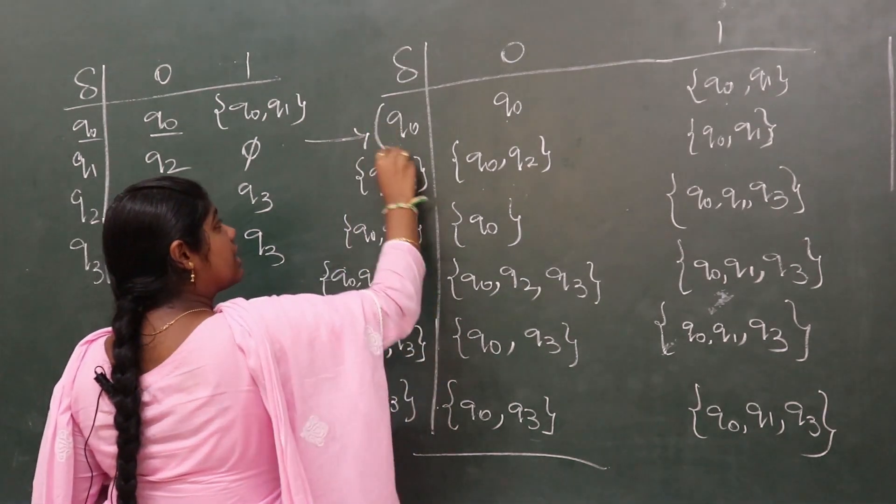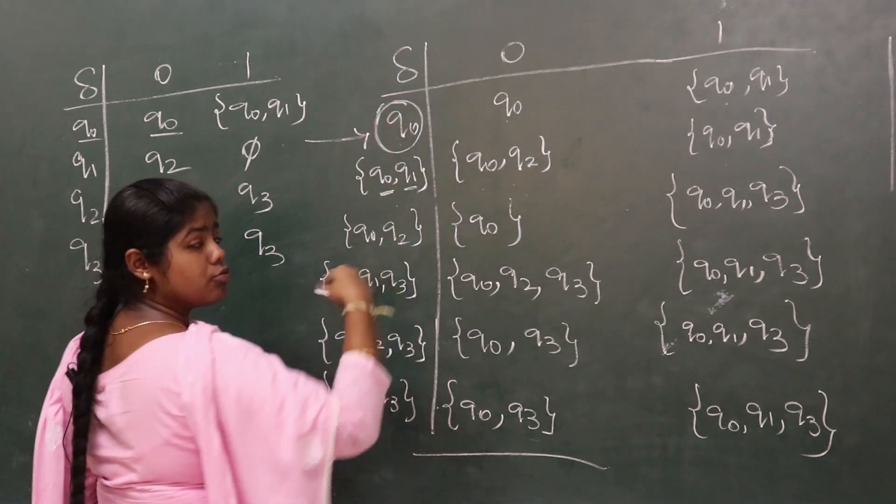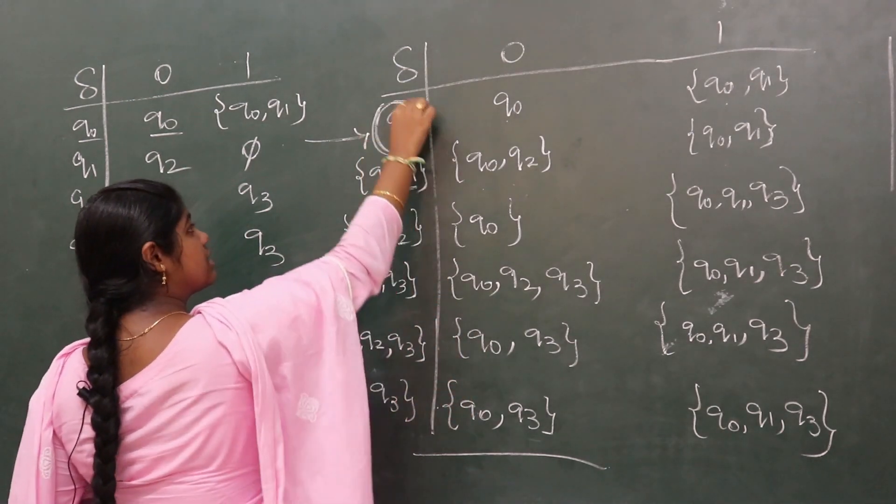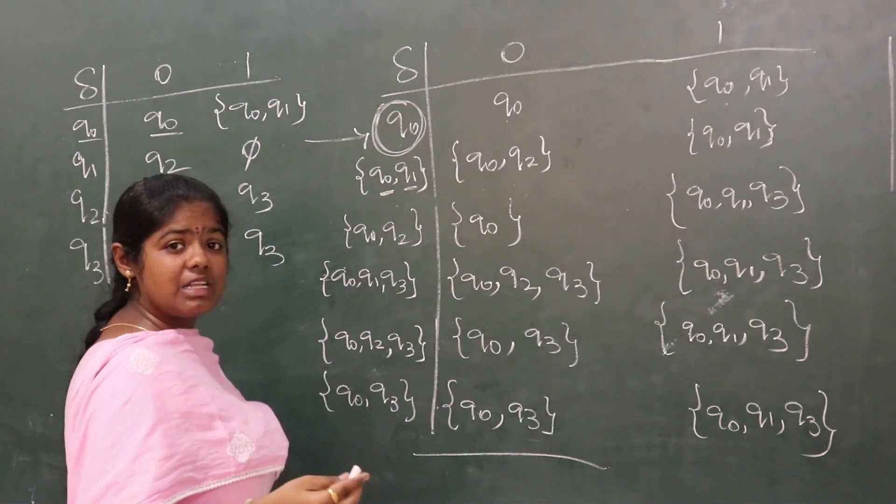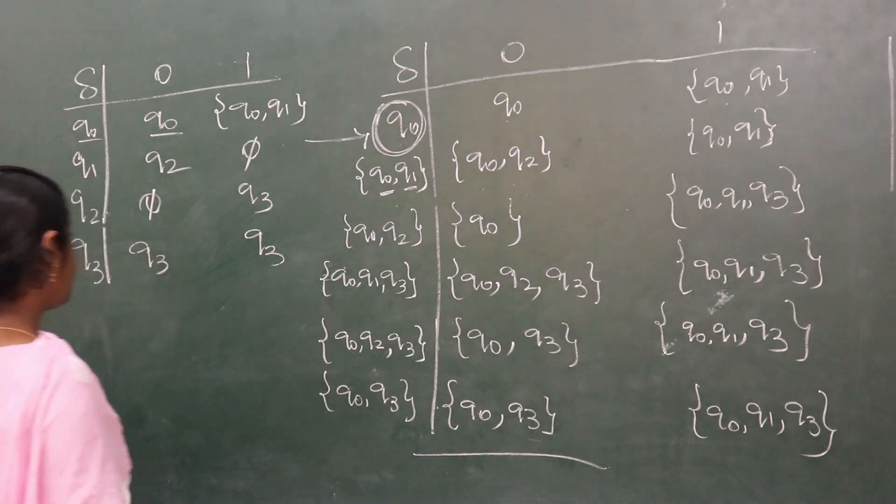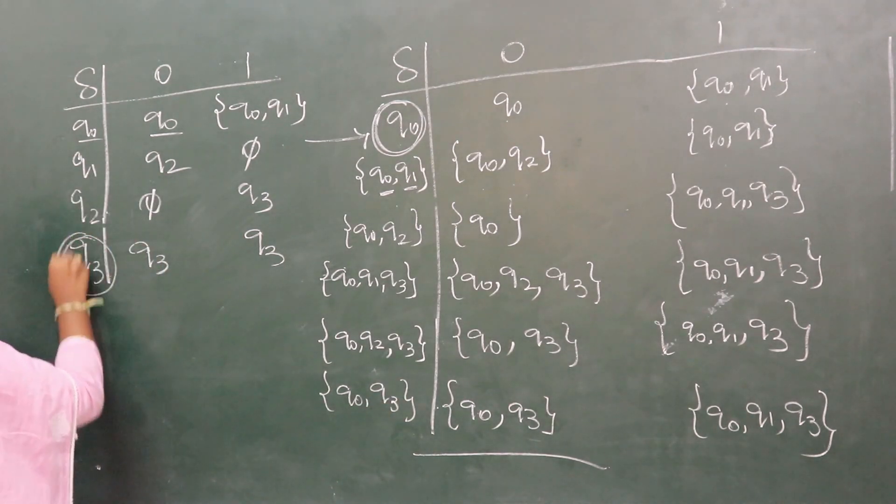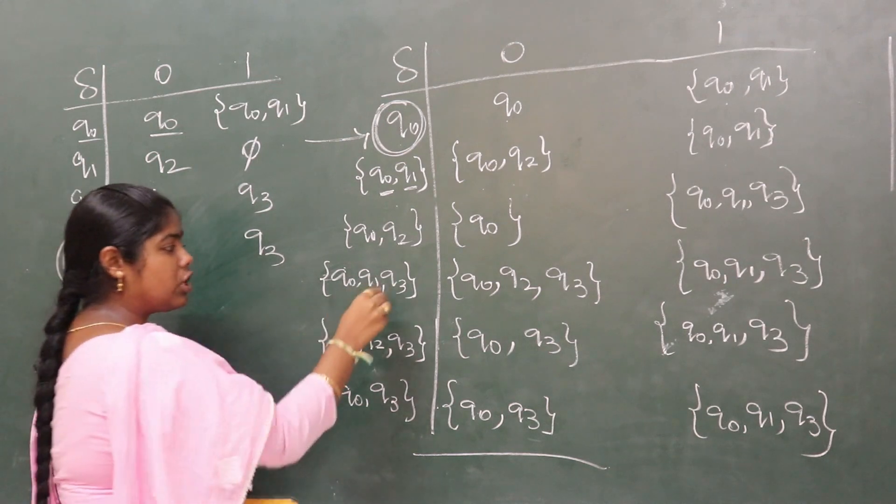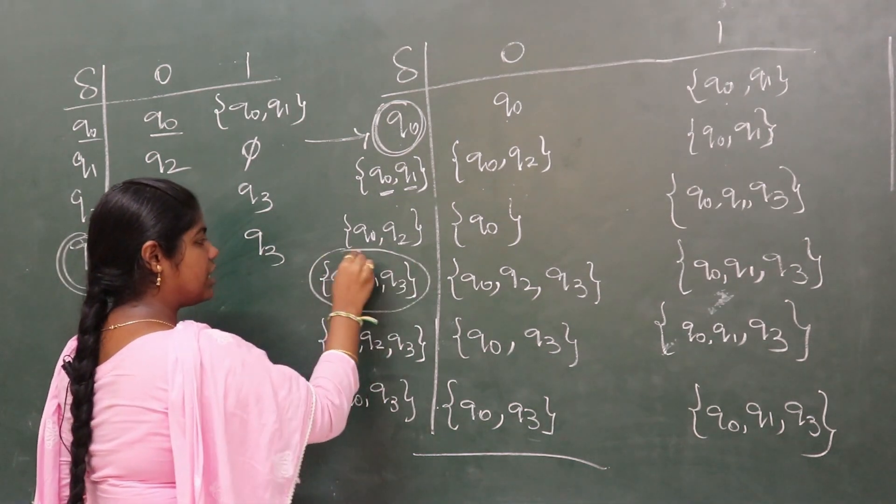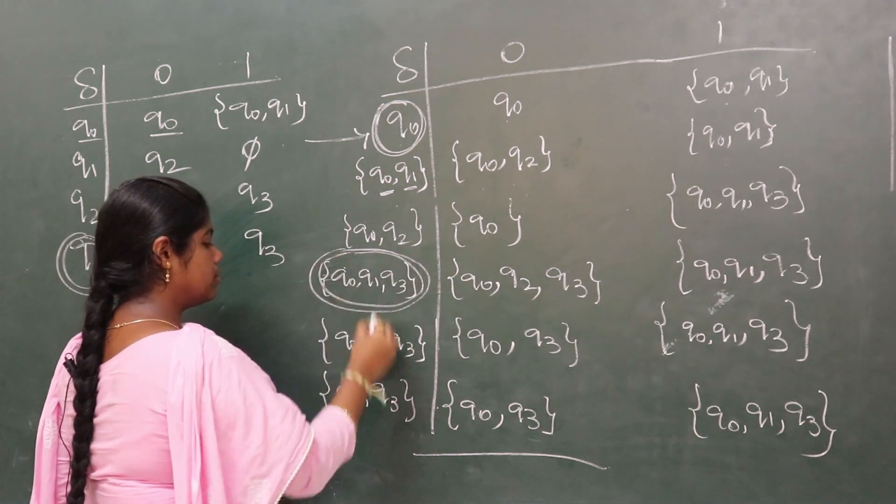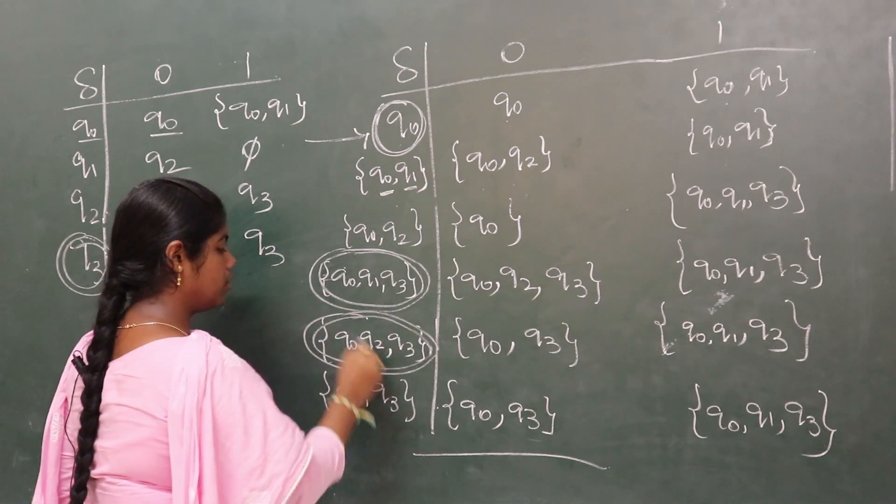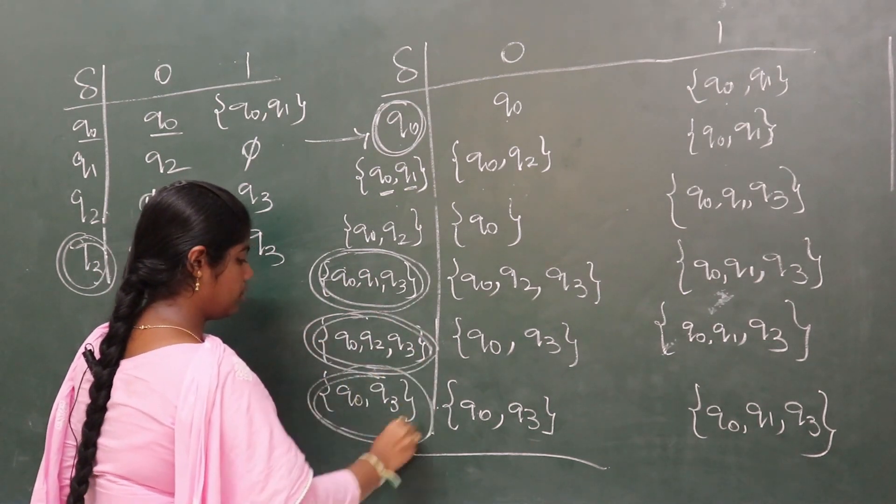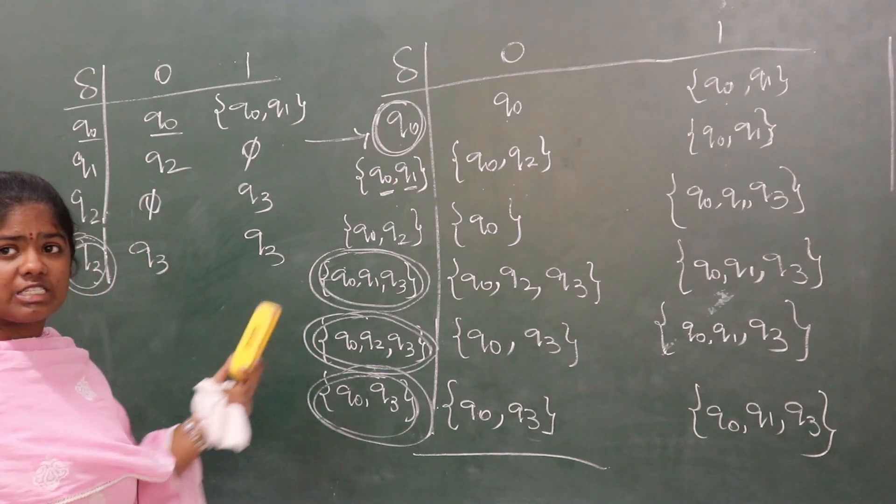The starting state is q0. This is the starting state. Here is the final state - q3 is the final state. So these all become the final states.